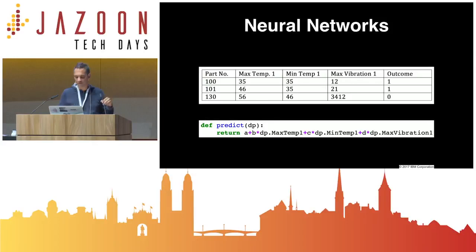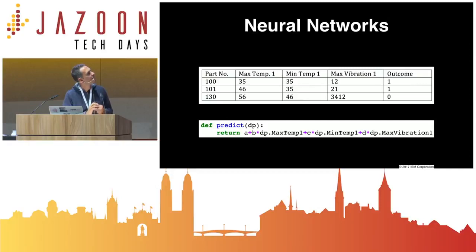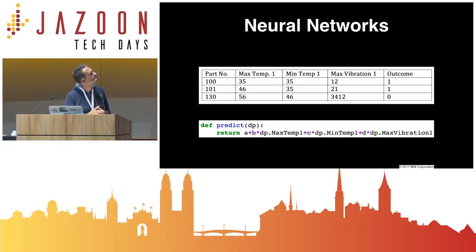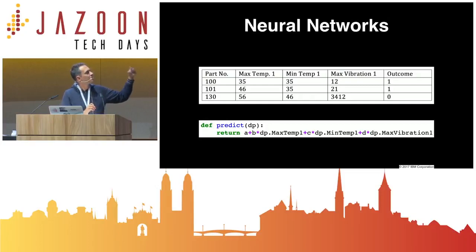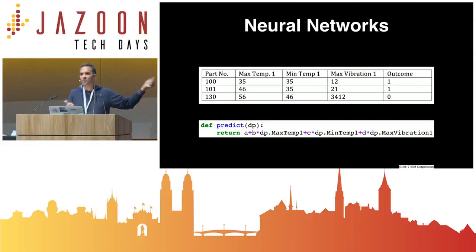If I now want to reimplement that model by choosing A, B, C, and D — B and C would be zero, and you could choose A minus 1 and D minus 1 over 3,412. That would work, but this equation has an infinite number of solutions. The key thing is you can have an algorithm learn A, B, C, and D for you — therefore it's called machine learning, and then you get a linear regression model.